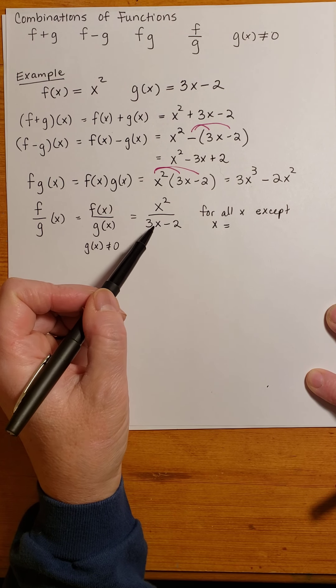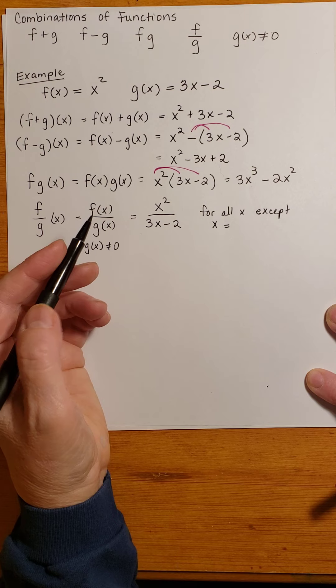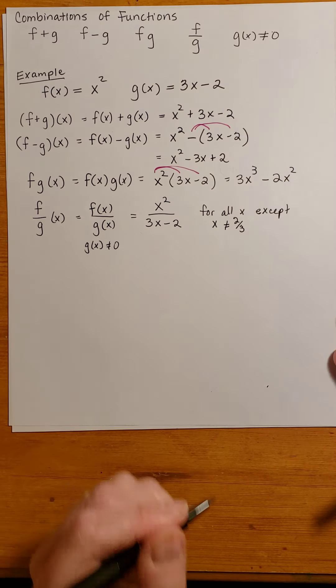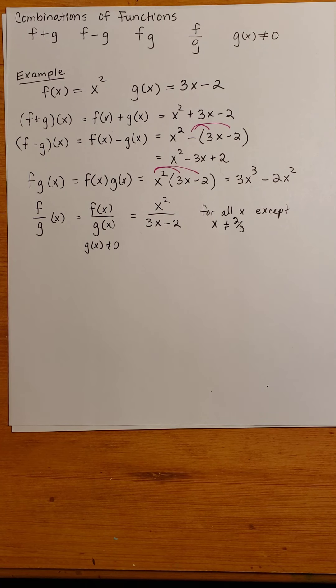3 times 2/3 is 2, and then we subtract 2. So x cannot equal 2/3. And that's how we do combinations of functions.